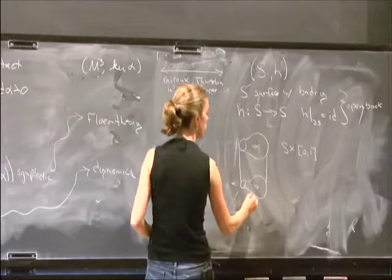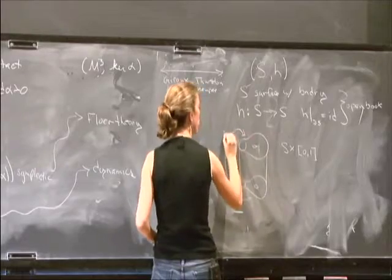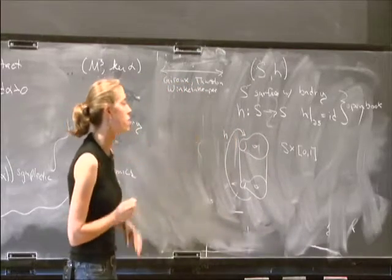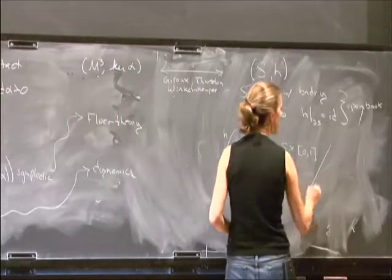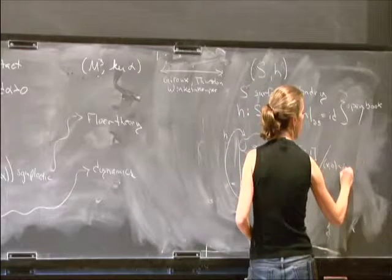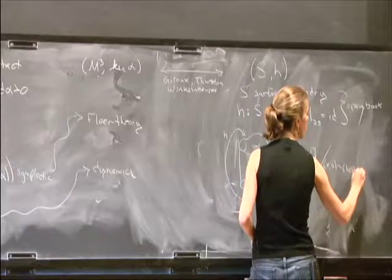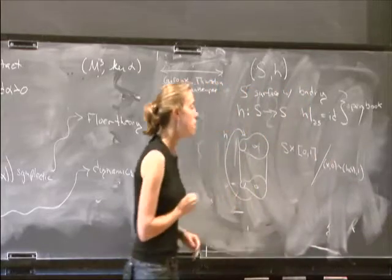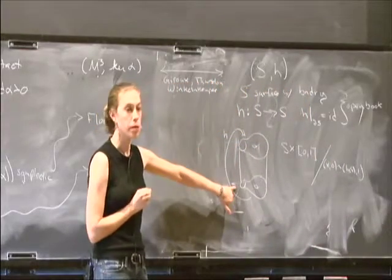And then use this homeomorphism h to glue up to get the mapping torus for this construction. So this is just taking the identification. Points x0 are identified with h of x1. This gives you a manifold with toroidal boundary components.